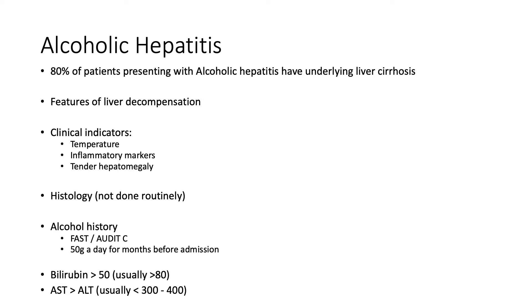Two things to look at: first, the alcohol history. You can perform the FAST questionnaire or the AUDIT-C questionnaire to look for signs of harmful drinking. A collateral history is also really important. We would expect to see an alcohol intake of around 50 grams per day for the months preceding presentation in alcoholic hepatitis. Sometimes patients stop or reduce drinking immediately prior to admission because they feel unwell, but it's important that the patient has had alcohol intake within the six to eight weeks preceding admission.